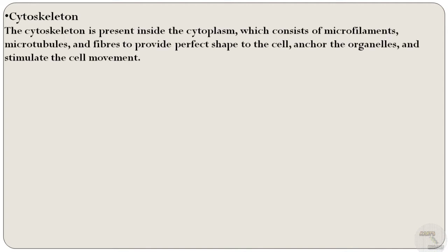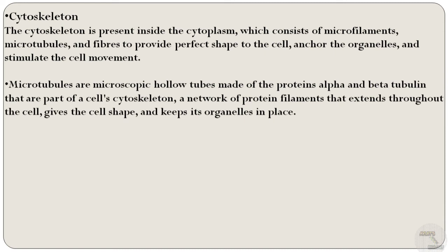Next is the cytoskeleton. The cytoskeleton is present inside the cytoplasm and consists of microfilaments, microtubules, and fibers to provide shape to the cell, anchor the organelles, and stimulate cell movement. The microtubules are microscopic hollow tubes made of the proteins alpha and beta tubulin that are part of a cell's cytoskeleton — a network of protein filaments that extends throughout the cell, gives the cell its shape, and keeps its organelles in place.